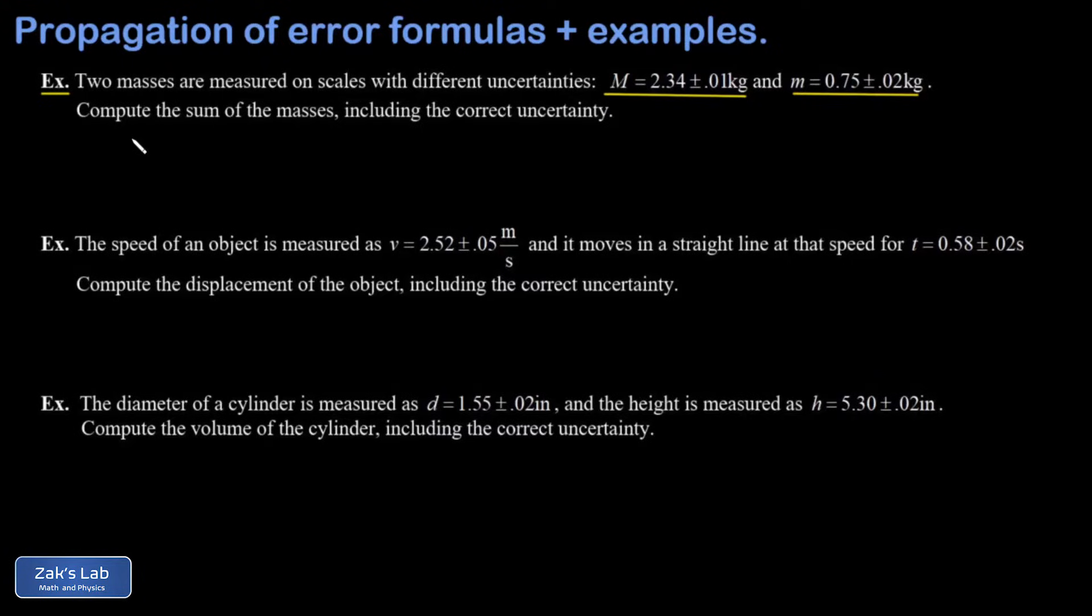So I'll go ahead and use z for the sum, and z is given by big M plus little m. When I run the numbers, that comes out to 3.09 kilograms. So what about the uncertainty in z? That's given by the square root of the sum of the squares of the individual uncertainties. So the first one was 0.01, second one was 0.02.